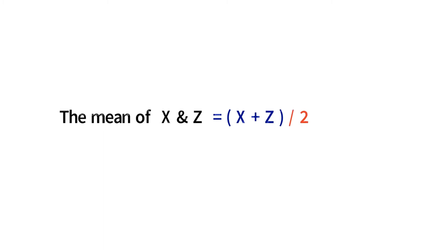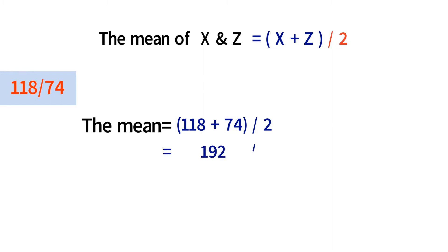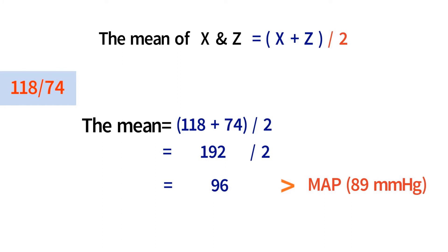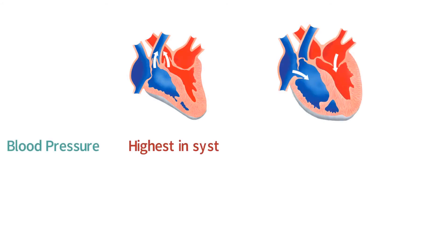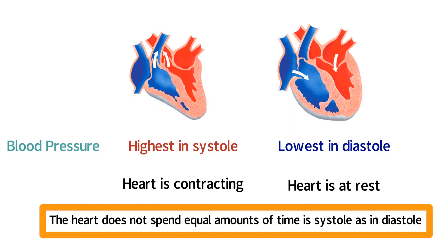In calculating the mean of two numbers, it is common to add them and divide by 2. For 118 over 74, that would give 192 divided by 2, equaling 96. However, this value is higher than the calculated mean arterial pressure of 89 mmHg. Why does the MAP formula result in a lower value than the standard arithmetic mean? The answer lies in heart function. Blood pressure is highest in systole when the heart is contracting, and lowest during diastole when the heart is at rest. The heart does not spend equal amounts of time in systole and diastole.